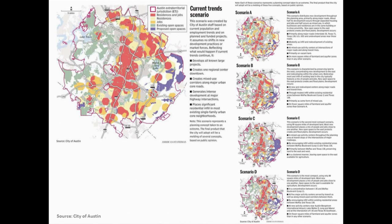Scenario planning has recently become quite popular as a means to evaluate more compact development alternatives for future growth in major metropolitan areas in the US. Examples include Envision Utah, the Chicago 2020 plan, Envision Central Texas, and more recently, the Imagine 2040 plan for the Triangle area in North Carolina.